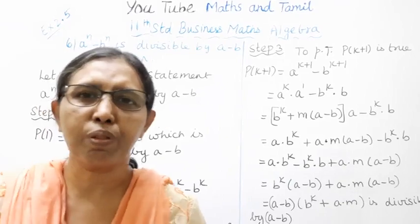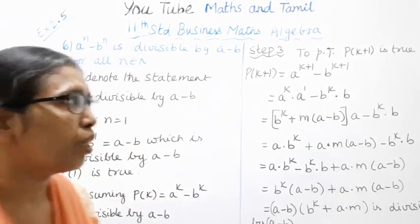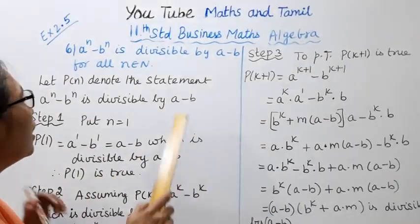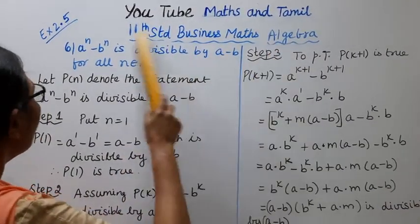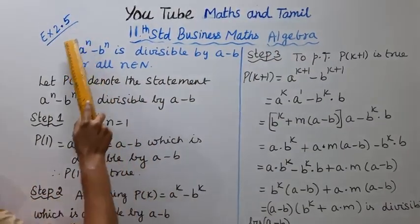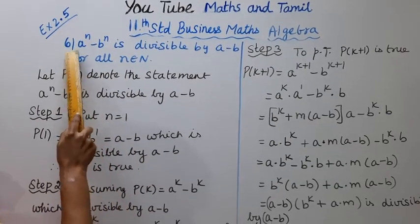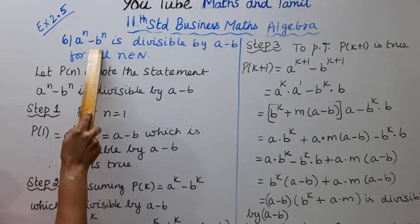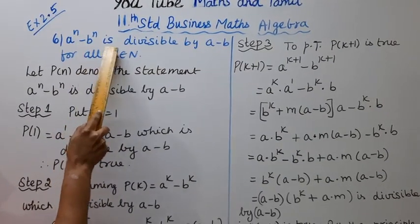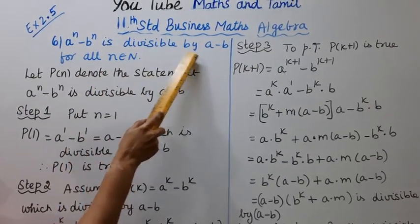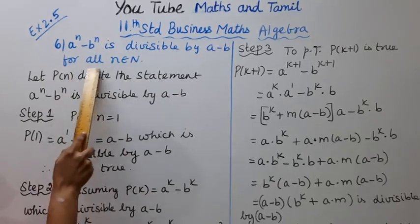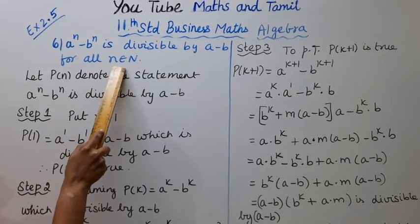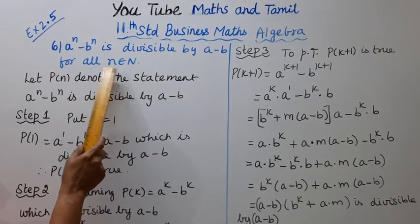Hello students, welcome to Maths and Tamil channel. This is Business Maths Algebra, Exercise 2.5, Problem 6M. We need to prove that a power n minus b power n is divisible by a minus b, for all n belonging to the natural numbers.